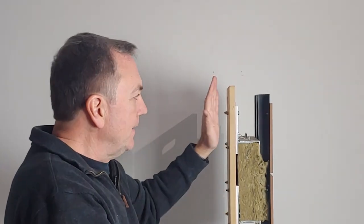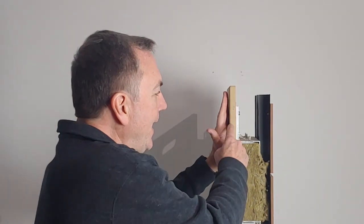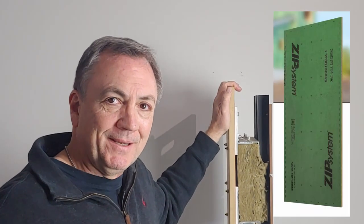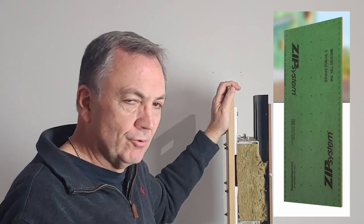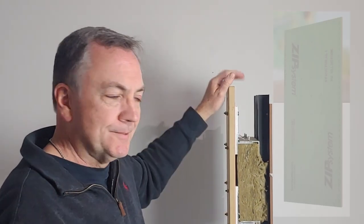So imagine that the shipping container is back where my hand is, and then you would have another board, a sheathing board outside of this. I'd recommend actually using zip sheathing because it has additional air and water barriers on it and it's really efficient—it's all in one package.